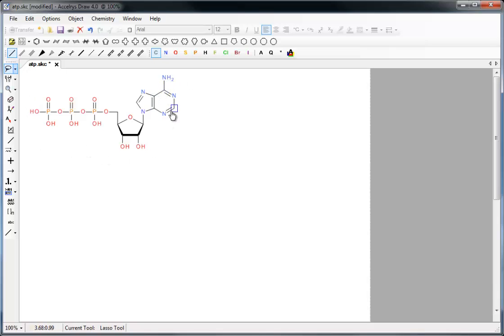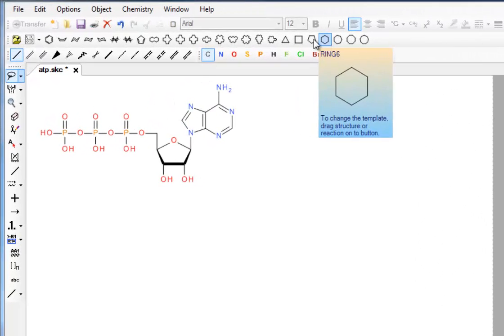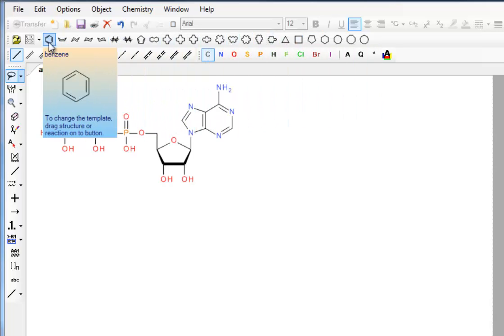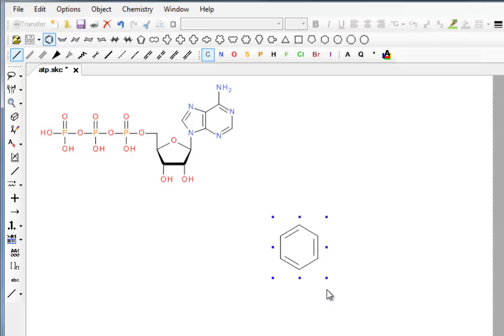The base consists of a six-membered ring attached to a five-membered ring. There's a couple of six-membered rings in the template, so we're going to click on a benzene ring just for simplicity. I'll click on that down there and a benzene ring appears.